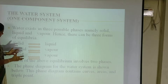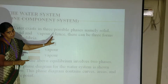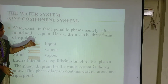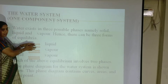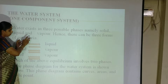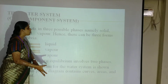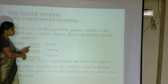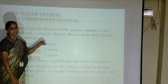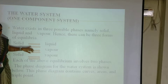This is a one-component system. The best example of a one-component system is water. Water has three possible phases: solid, liquid, and vapor. When solid ice is melted to liquid, there is an equilibrium between solid and liquid. Similarly, when water in the liquid state is heated and converted into vapor, there is an equilibrium between liquid and vapor.